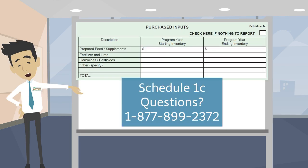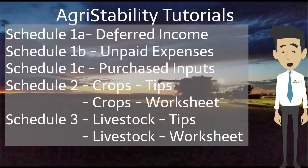If you have any other questions on Schedule 1C, please do not hesitate to give us a call at 1-877-899-2372. We hope you found what you needed to know in that tutorial, and we welcome you to go back to any of the other tutorials on filling out your supplemental forms.